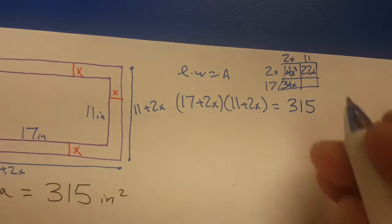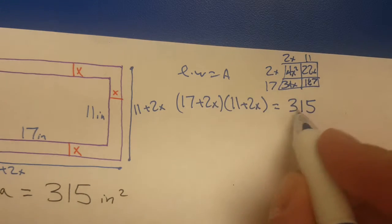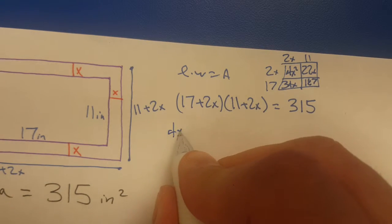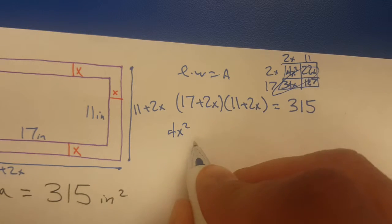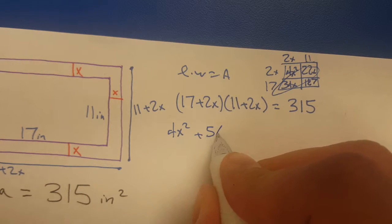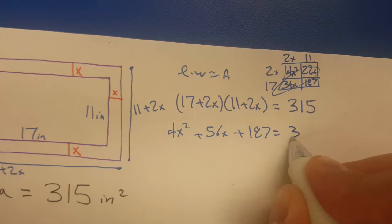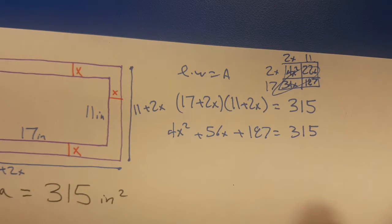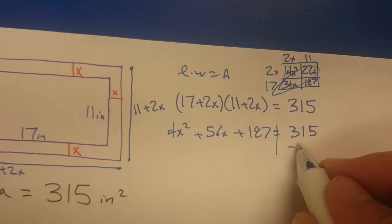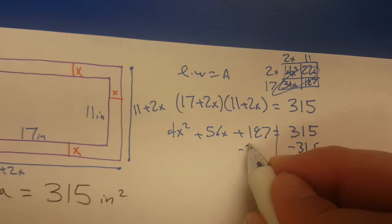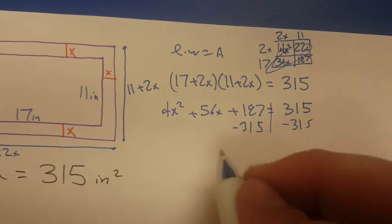Rewrite all of this. It's 4x squared, combined like terms, that's going to be 56x plus 187 equals 315. Now we can't do any of our factoring tricks until it's equal to zero.